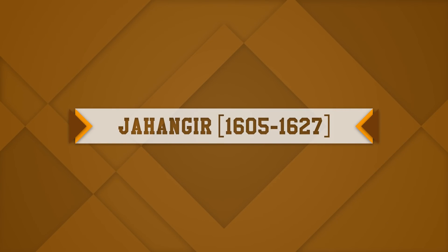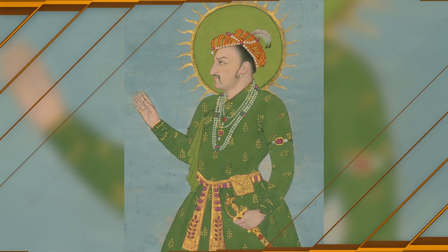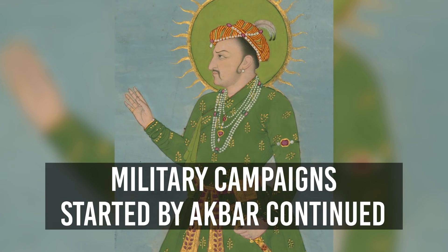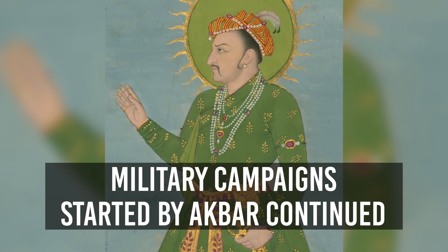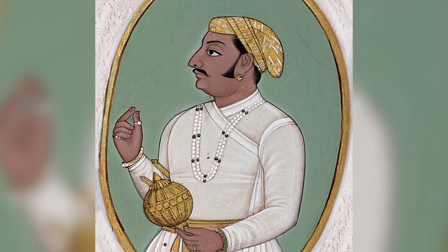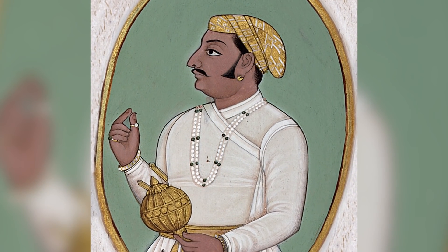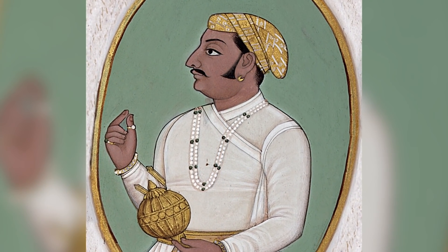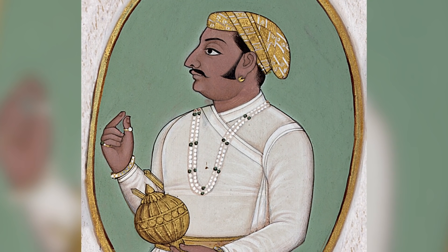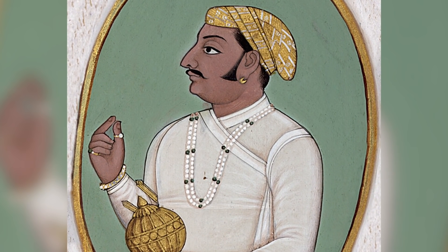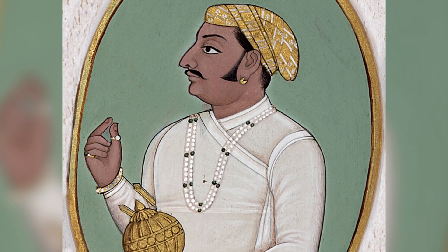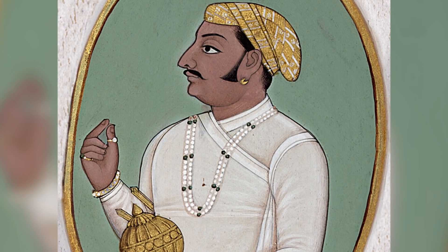Jahangir, from 1605 to 1627. Military campaigns started by Akbar were continued by Jahangir. The Sisodiya ruler of Mewar, Amar Singh, accepted Mughal service. Less successful campaigns against the Sikhs, the Ahoms and Ahmednagar followed.